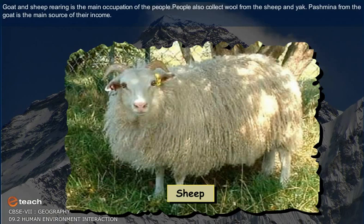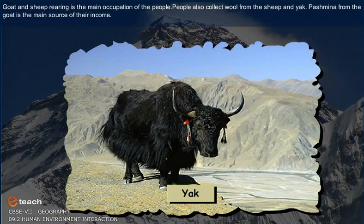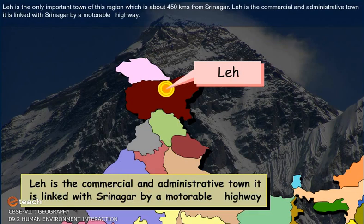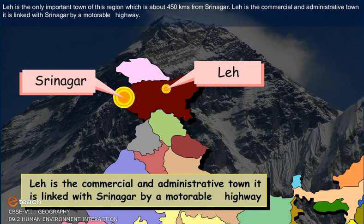People also collect wool from the sheep and yak. Pashmina from the goat is the main source of their income. Leh is the only important town of this region, which is about 450 kilometers from Srinagar.